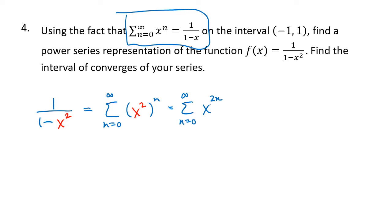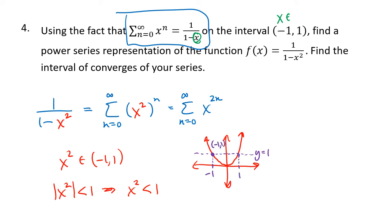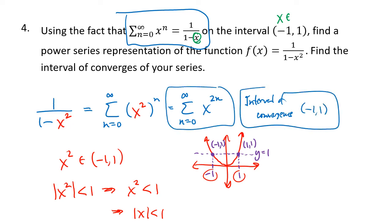We know the original series requires the substituted value to be in the interval (-1, 1), so x squared must satisfy the absolute value of x² being less than 1. Since x² is always non-negative, that's the same as x² < 1. Thinking about the graph of y = x², it's a parabola, and we want to know when it's less than y = 1. That's from -1 to 1 — the intersection points are (-1, 1) and (1, 1). So the absolute value of x must be less than 1, and the interval of convergence is (-1, 1).